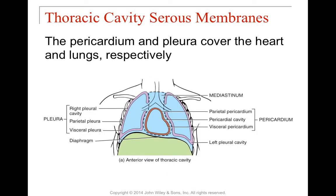The thoracic cavity has the pericardium covering the heart and pleural membranes covering the lungs. In the pleural cavity, parietal refers to the external layer and visceral refers to the layer touching the lung itself — parietal means outside, visceral means inside. The same applies to the pericardium: parietal pericardium is external, visceral pericardium is internal, with the pericardial cavity in between. The thoracic cavity is separated from the abdominal section by the diaphragm, a muscle that contracts downward to change lung volume and allow breathing.